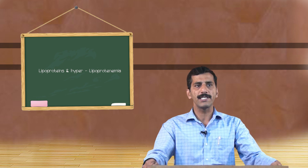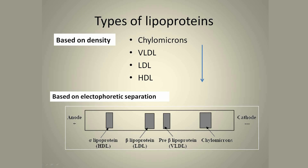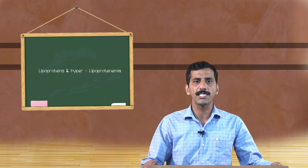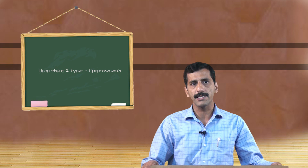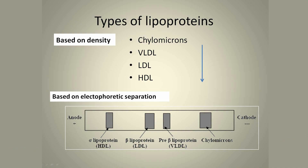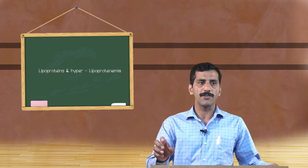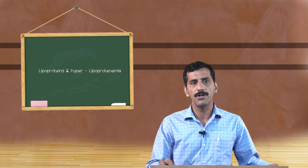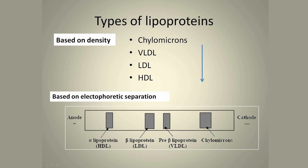Depending upon the density of lipoproteins, they are classified into chylomicrons, VLDL, LDL, and HDL. Chylomicrons, since they contain the highest proportion of lipids, have very low density, and the density goes on increasing from VLDL to LDL to HDL. These lipoproteins are also classified based on their migration in electrophoresis, where we find four different types of bands: chylomicrons, pre-beta lipoproteins which is VLDL, beta lipoprotein which is LDL, and alpha lipoprotein which is HDL.